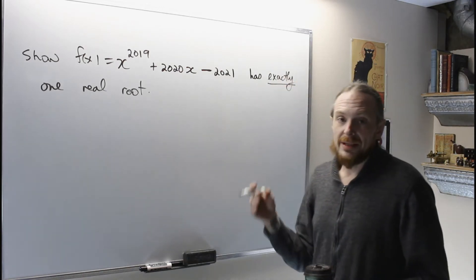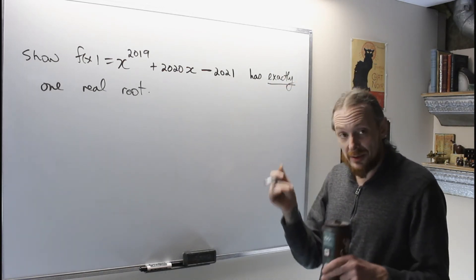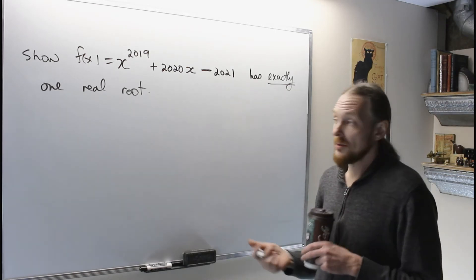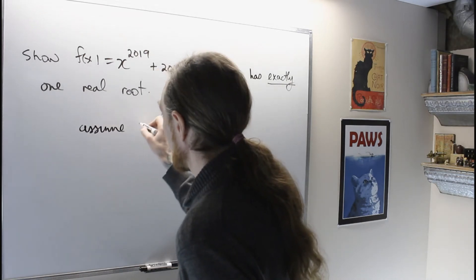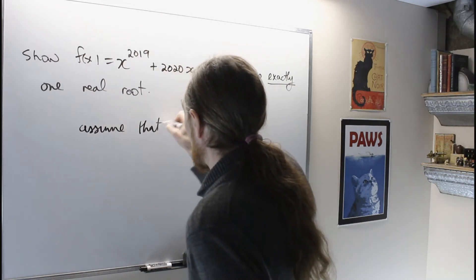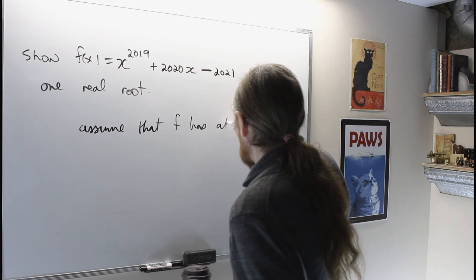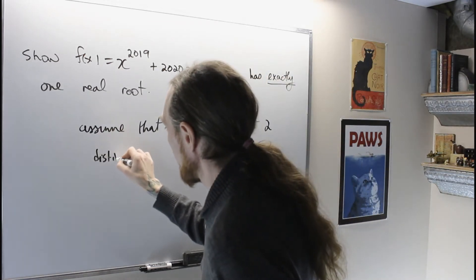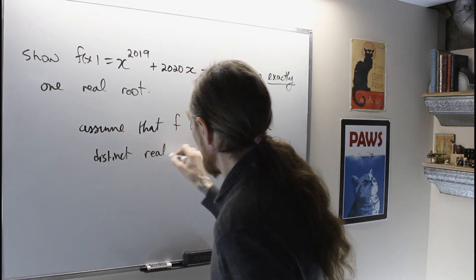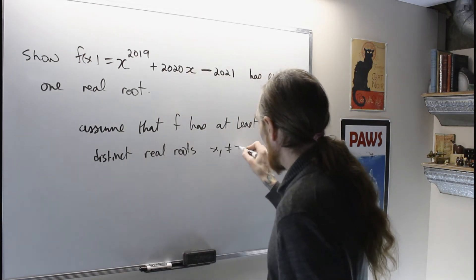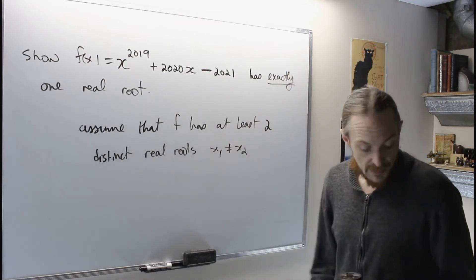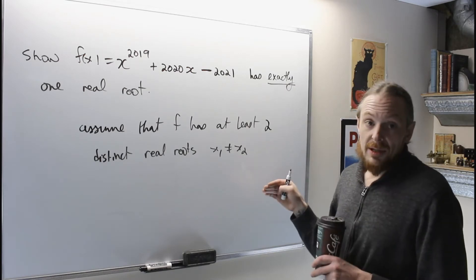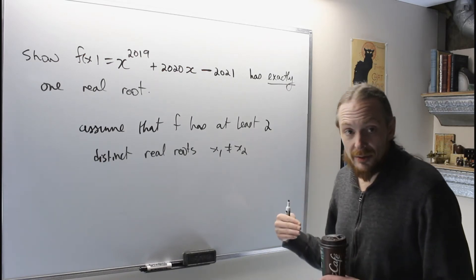What we're going to do to show that there's at most one real root, we're going to use the negation of that, and assume that there is at least two or more real roots. So assume by contradiction that f has at least two distinct real roots, x1 not equal x2. What we're going to do with that is, we're going to use Rolle's theorem to argue why we get a logical contradiction under this assumption.